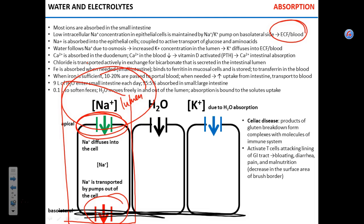We have to look at these processes somewhat statically. Imagine sodium ions flowing into the cell, and water will follow due to osmosis. When water leaves the intestinal lumen, the concentration of other ions goes up — because if you remove water from a solution, you make it more concentrated. This increased concentration causes potassium to diffuse into the cell as well.